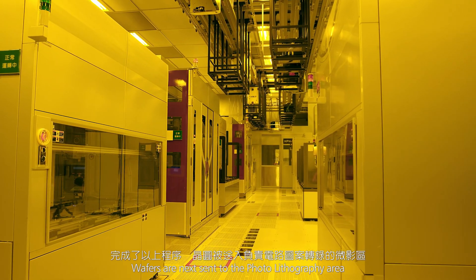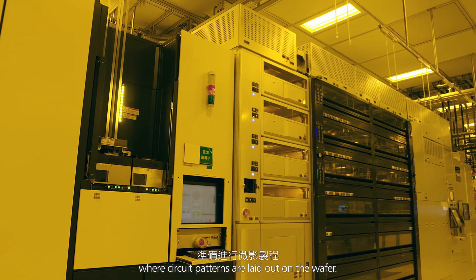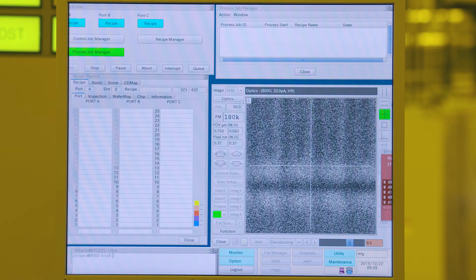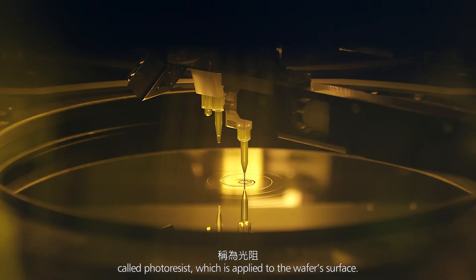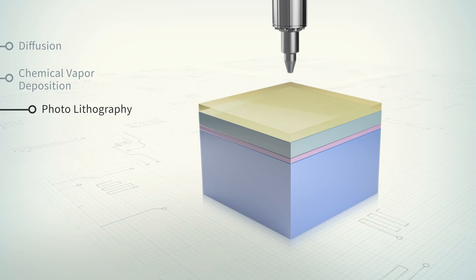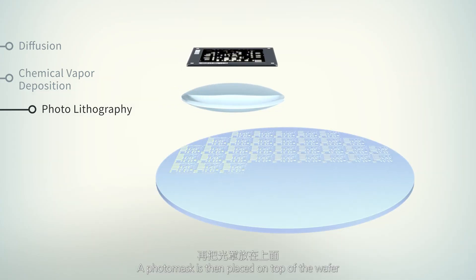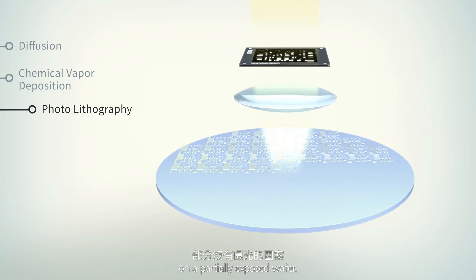Wafers are next sent to the photolithography area where circuit patterns are laid out onto the wafer. The process starts with a thin layer of photosensitive liquid called photoresist which is applied to the wafer's surface. A photomask is then placed on top of the wafer and illuminated to create a pattern on a partially exposed wafer.